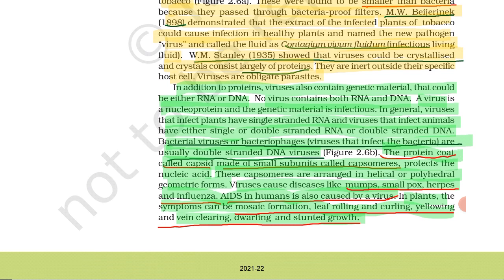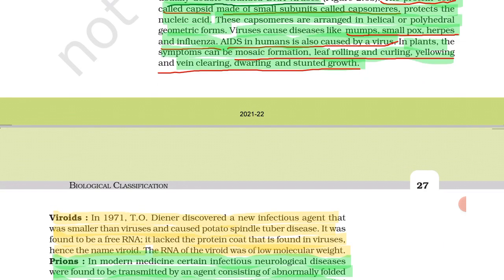Viruses cause diseases like mumps, smallpox, herpes, influenza, and AIDS in humans. In plants, symptoms can be mosaic formation, leaf rolling, curling, yellowing, vein clearing, dwarfing, and stunted growth.